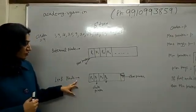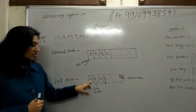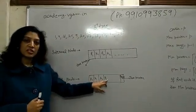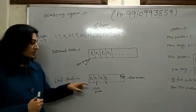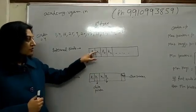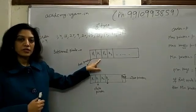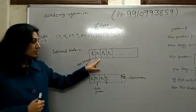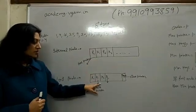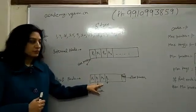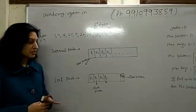This is the structure of the leaf node in B plus tree: search key and data pointer. If you remember, in B tree we also had data pointers in the internal node, but in B plus tree we don't. All the data pointers are only on the leaf node — that is the main difference between B tree and B plus tree.